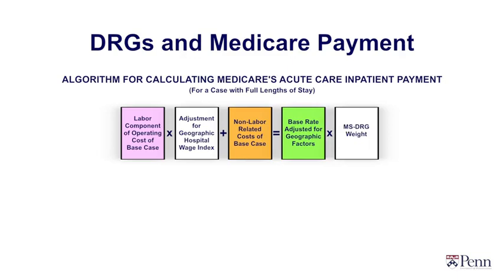There are 746 MS-DRGs, and they're specific to particular diagnoses and diseases. There's an MS-DRG, for example, for an exacerbation of emphysema, or an MS-DRG for a heart attack patient. If it's a simple, uncomplicated heart attack, that's one MS-DRG. But if the patient also has diabetes and hypertension, that's a different MS-DRG.